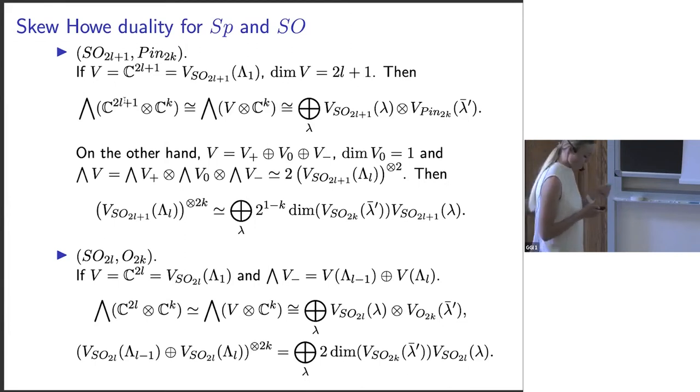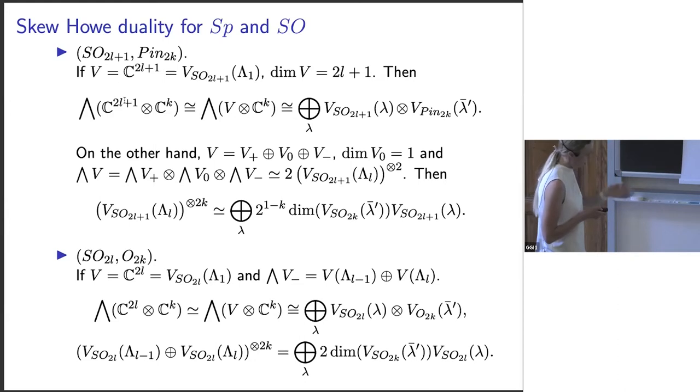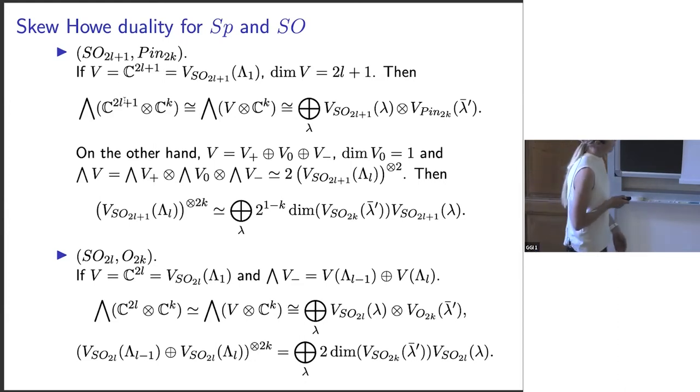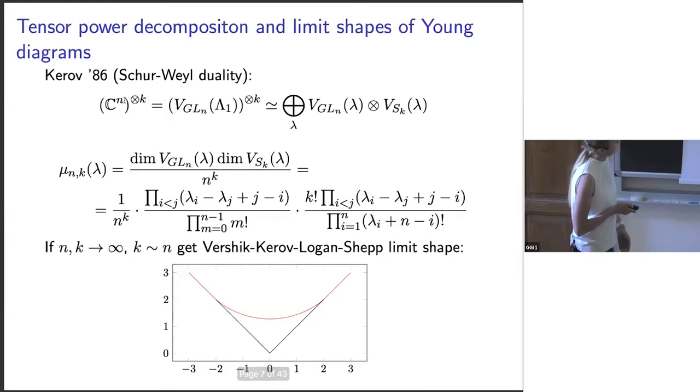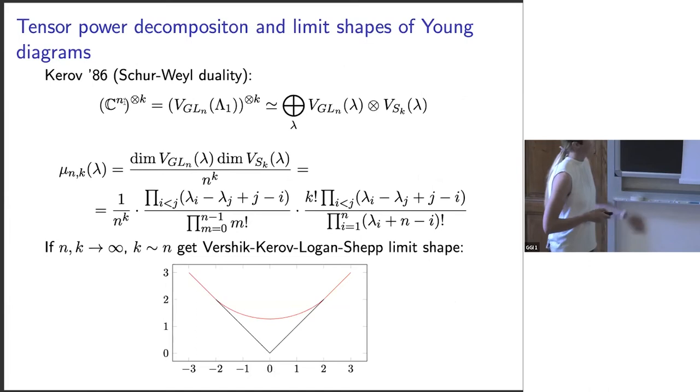We can decompose even tensor powers of the last fundamental representation into irreducibles with a certain factor of two and with multiplicities given by dimensions. For the D series, it is not just one fundamental representation but the sum of two — the last and the second-to-last fundamental representations — and the sum taken to tensor power 2k equals the exterior algebra to power k. We are thankful to Etingof for pointing out this fact.